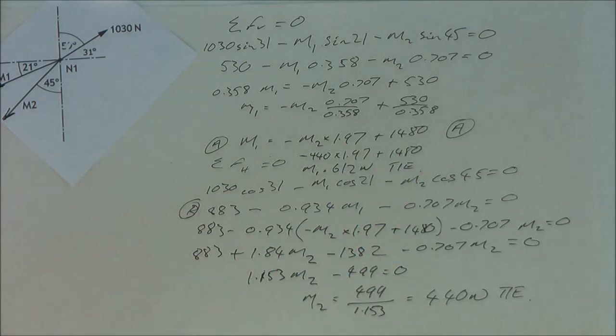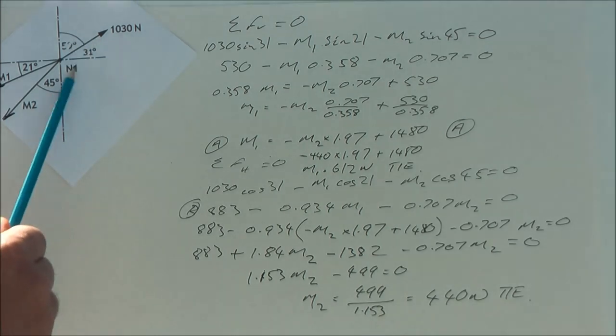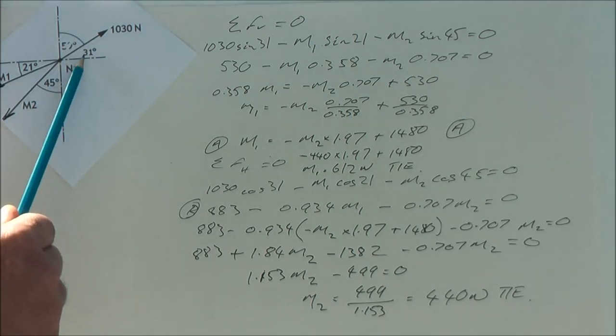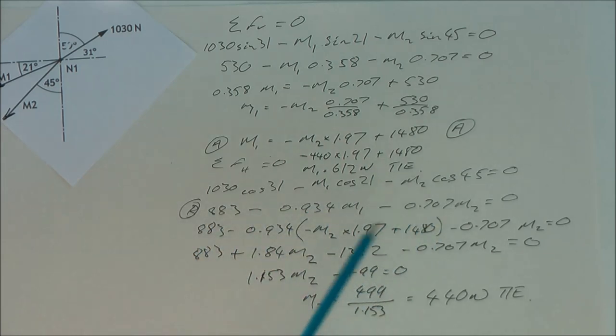Now I've done the sum of the forces in the horizontal equals zero. So we have 1030 cos 31 minus M1 cos 21 minus M2 cos 45. Press the calculator and I get the numbers.